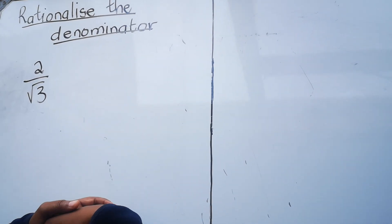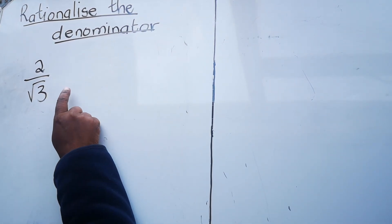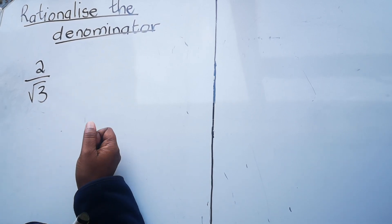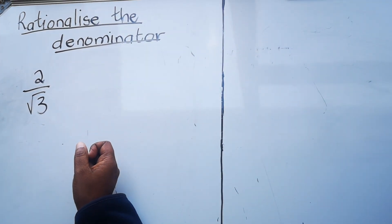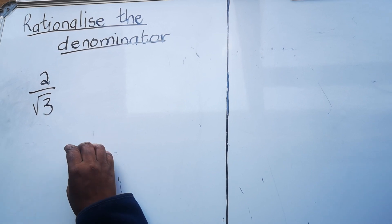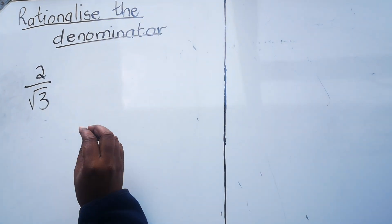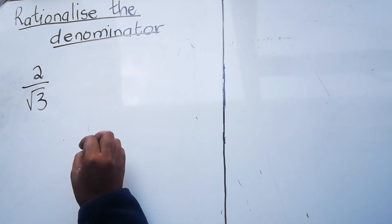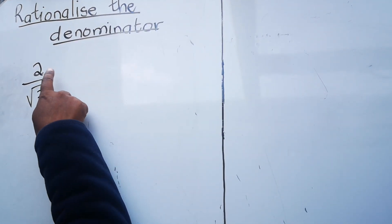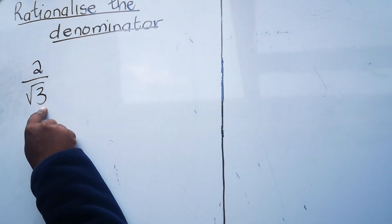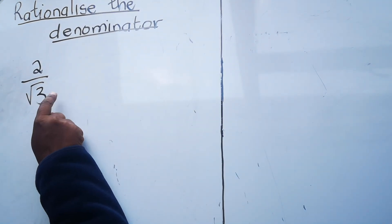Hello everyone, this is a great lesson where we're going to look at rationalizing the denominator. We'll start by explaining what rational means. When we were in grade nine, we were told about rational and irrational numbers. The definition is that a rational number is a number that can be written as a fraction where the numerator and denominator are integers. The square root of 3 is not a rational number, so that's why this lesson is about rationalizing the denominator.